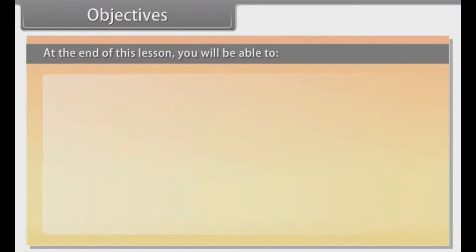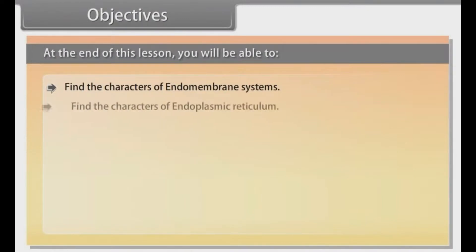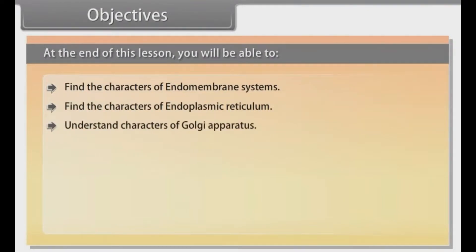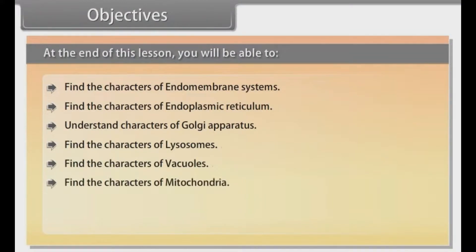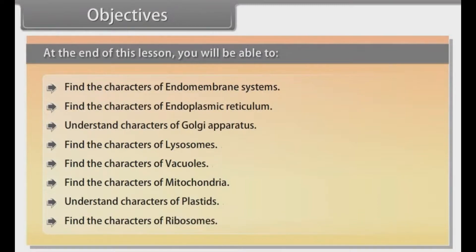Objectives. At the end of this lesson you will be able to find the characters of endomembrane systems, find the characters of endoplasmic reticulum, understand characters of Golgi apparatus, find the characters of lysosomes, find the characters of vacuoles, find the characters of mitochondria, understand characters of plastids, and find the characters of ribosomes.